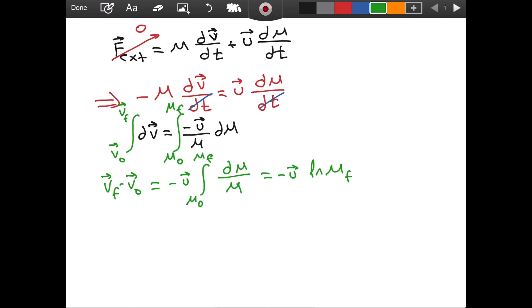So we will have ln Mf, the final mass, minus ln M0, the initial mass. And this is very important that it is inside parentheses, inside brackets. That's why we will distribute this negative. If we don't put the parentheses, then we make a mistake. If I solve this equation for v final, v final is equal to v0, the initial velocity, plus the change in velocity.